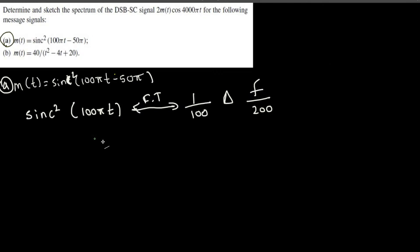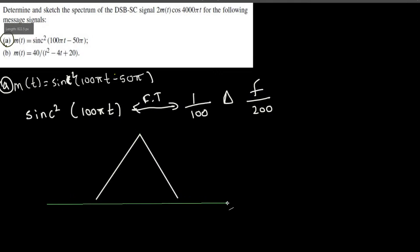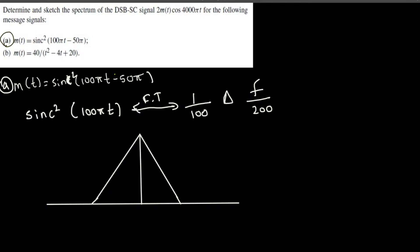We can go ahead and draw the diagram. This is going to be a triangle with a total width of 200, because that represents the total bandwidth. Since we don't have any shift, this is going to be centered at the origin — so it extends from -100 to +100 in the frequency domain. This is M(f), the Fourier transform of m(t).